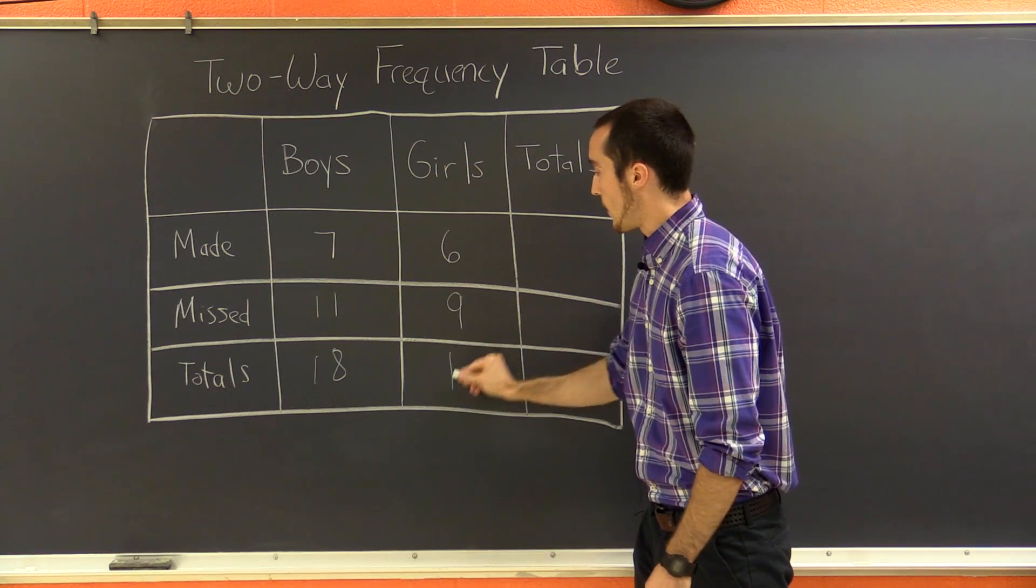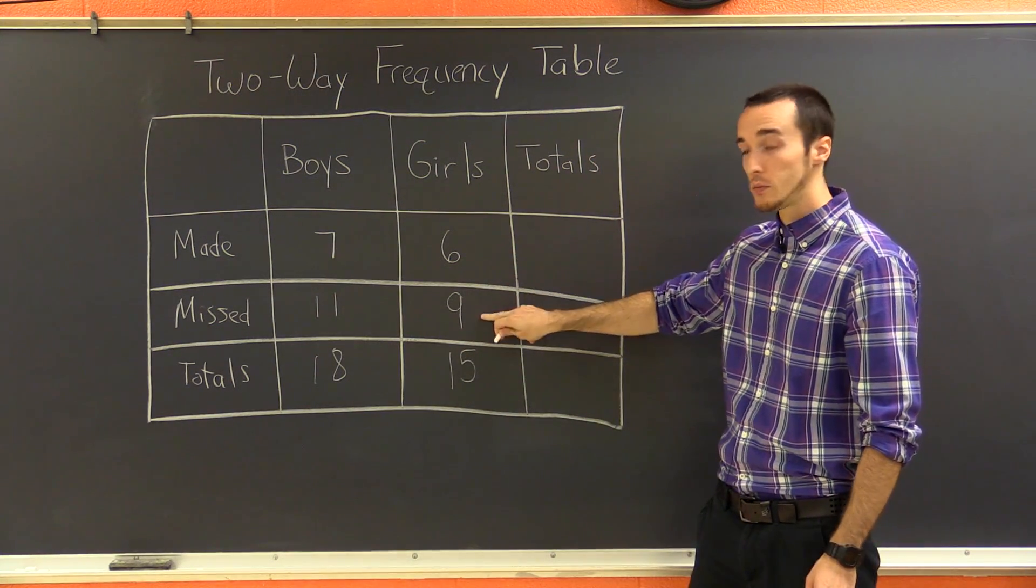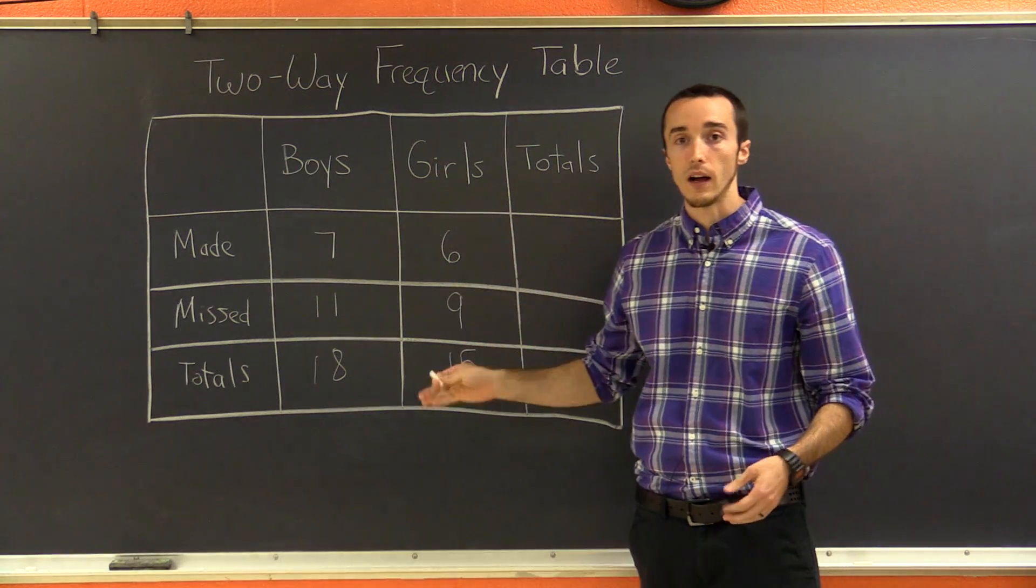So there are 18 boys in the class. You can do the same thing here and say that there are 15 girls in the class because if you take 6 plus 9, you get 15. It's the total for that column.